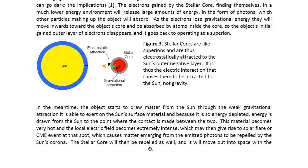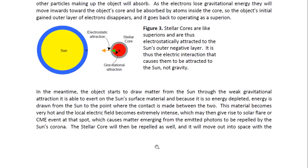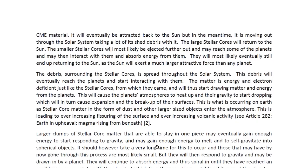And because it is so energy depleted, energy is drawn from the sun to the point where the contact is made between the two. This matter becomes very hot and the local electric field becomes extremely intense, which may then give rise to solar flare or CME type events at that spot, which then causes matter emerging from the emitted photons to be repelled by the sun's corona. The stellar core will then be repelled as well and it will move out into space with the CME material. It will eventually be attracted back to the sun, but in the meantime it is moving out through the solar system, taking a lot of its shed debris with it.